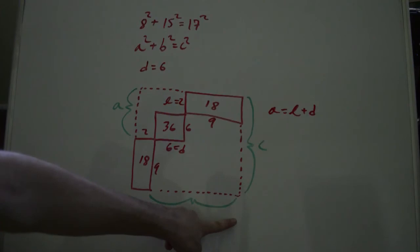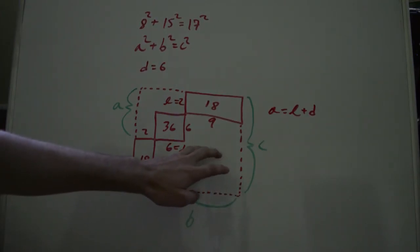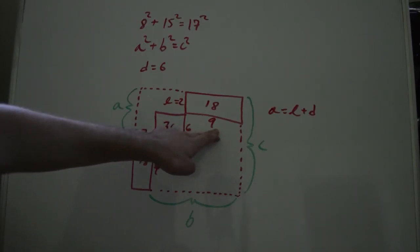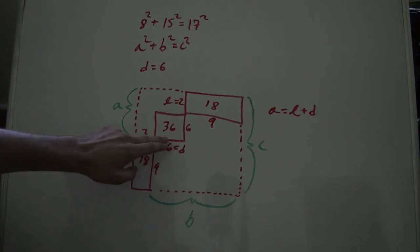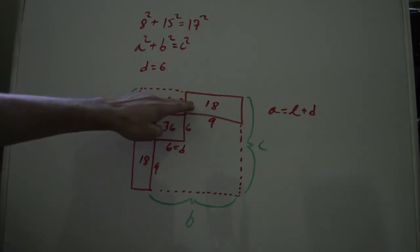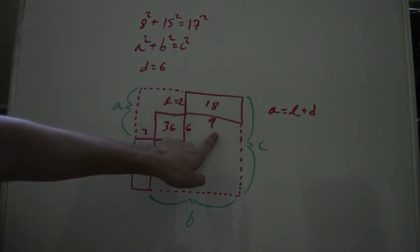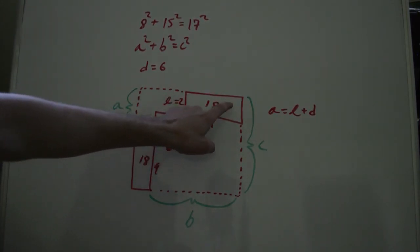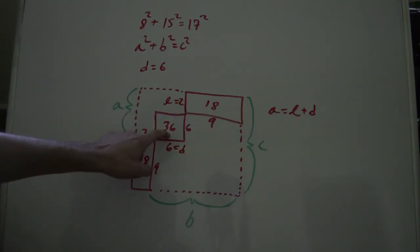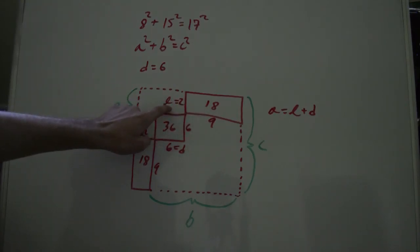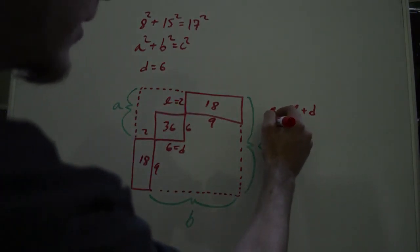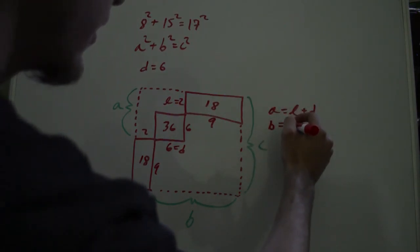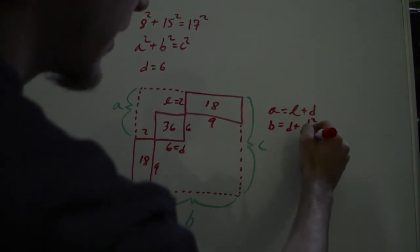And this length here b is just d plus this length here. Now what's this length? So what do we do to get this right here? We said first, d squared is 36, that's the area here. And half of 36 needs to go here, so that's 18. So so far we have d squared divided by 2. And then we have this l here. So we know if we want to get this length right here, we need to divide this area by the length and we get the other length. Because this length times this length equals the area. So we get d squared divided by 2 divided by l. In other words, our side length b equals d plus d squared divided by 2l.